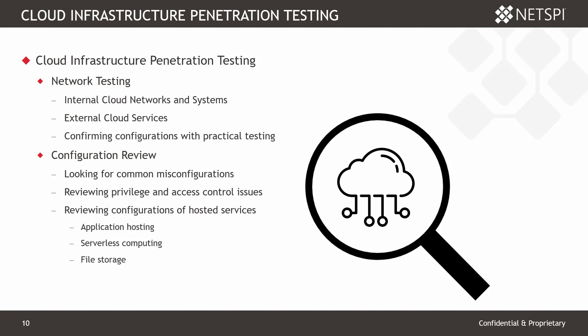We also account for malicious internal users who might scan or attack those systems on the internal environment. Finally, we wrap that up with configuration review for common misconfigurations on your cloud platform — issues with user privileges, access control, or misconfiguration of hosted services. The number of times we see applications or databases with firewall rules that expose them to the entirety of the internet is quite common. As people are learning to use these cloud services, they will make mistakes, and we want to audit those configurations to make sure we're fixing those mistakes as they happen.